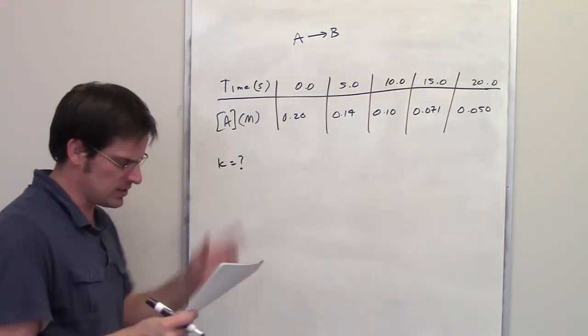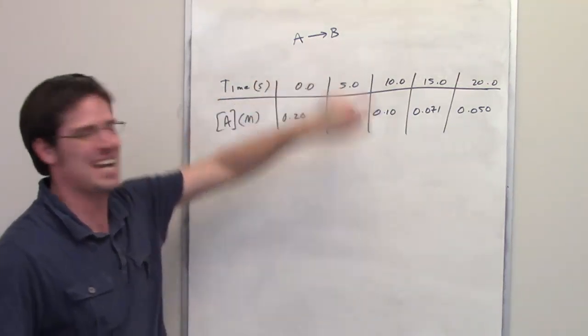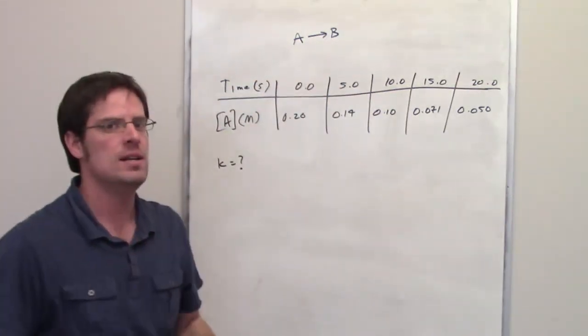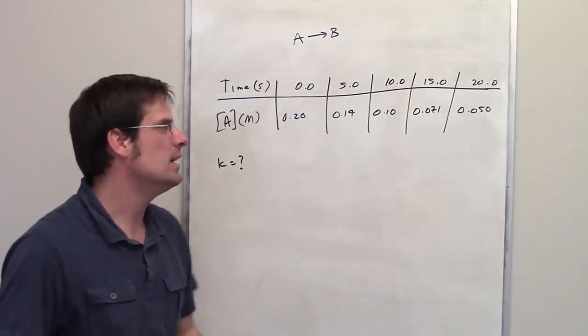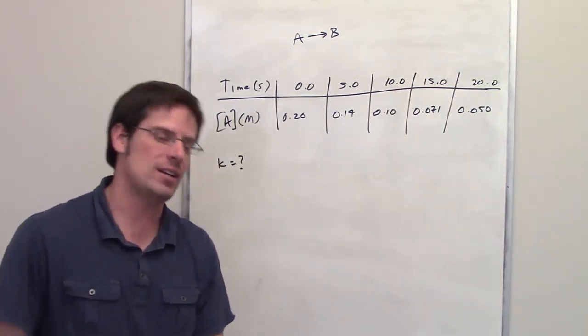So here's how we do it. For this example right here, it tells us a very simple reaction, A converting to B, and it tells us furthermore that this reaction is first order with respect to A. Now that might sound obvious by looking at it, but it's not always true. In fact, oftentimes,